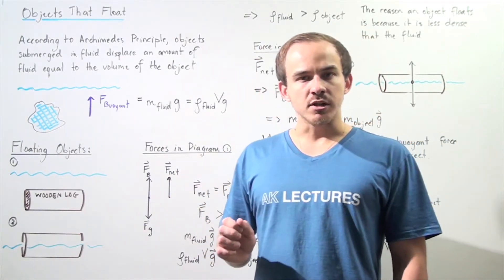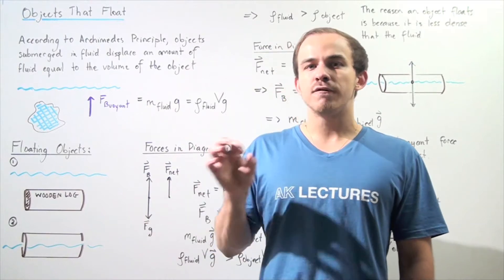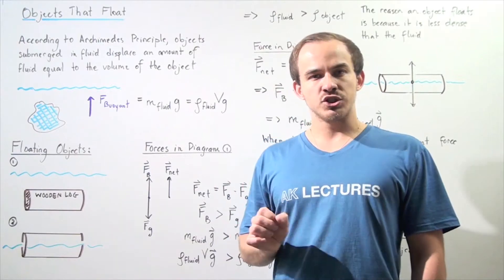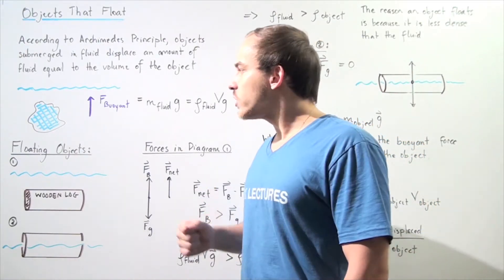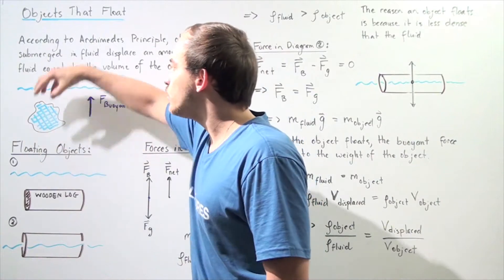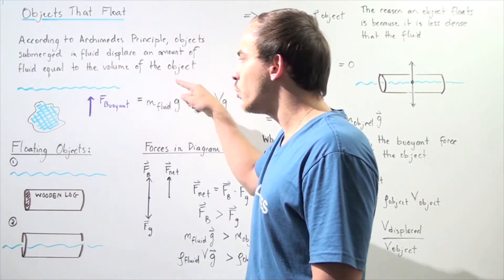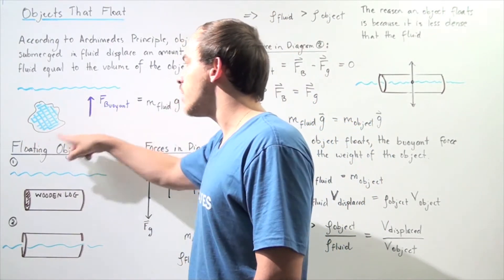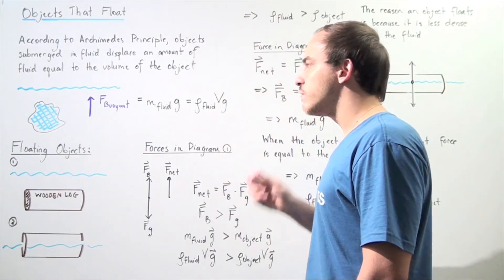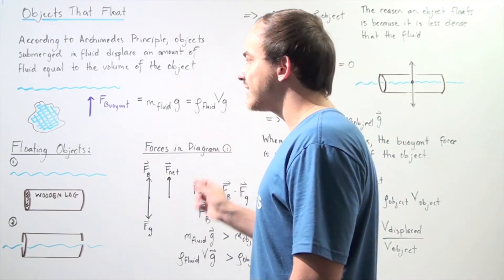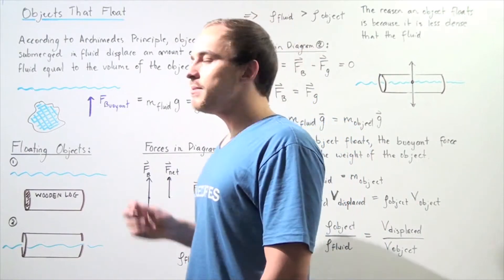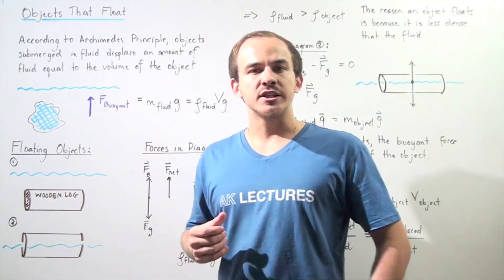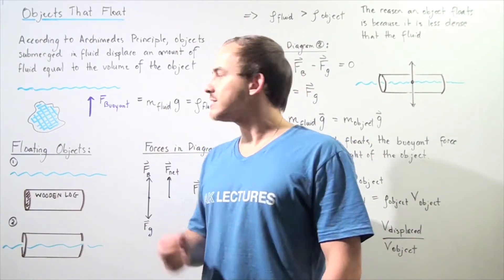According to Archimedes' Principle, an object that is submerged into a fluid will displace a volume of fluid that is equal to the volume of that object. For example, if we take an object and submerge it into our fluid, the volume of fluid that the object displaced is equal to the volume of the object itself. The force of buoyancy, also known as the buoyant force acting on that object, can be calculated by taking the product of the mass of the fluid that the object displaced and the gravitational constant g.